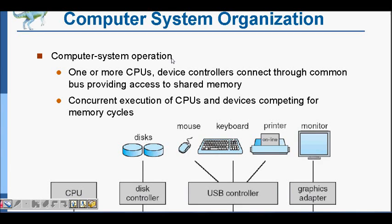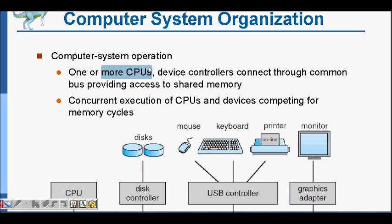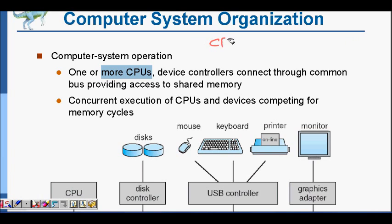In this lecture, which is an introduction to operating systems, we will learn about computer system organization — how is the computer organized. A computer system basically has one or more CPUs. The CPU is the central processing unit which executes your code and instructions. They are the main workers who execute your instructions.